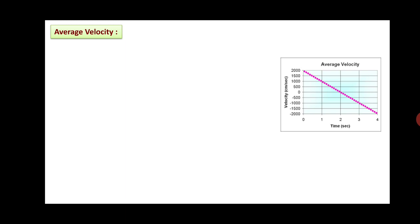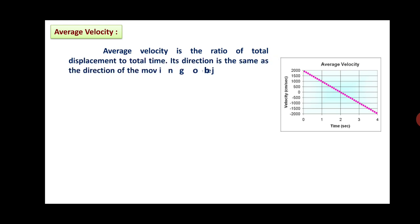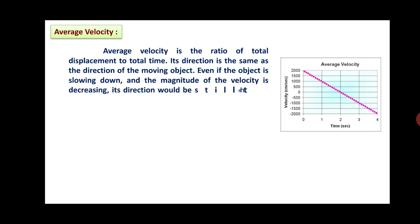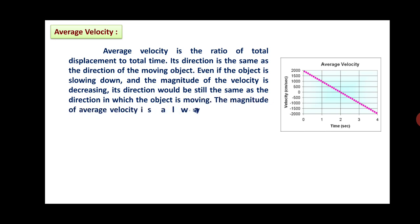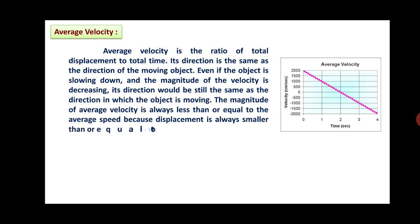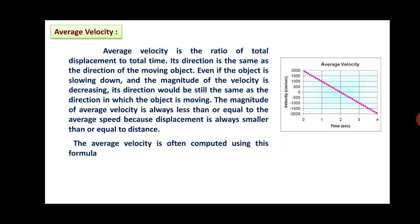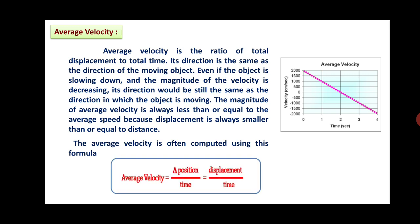Now we will see average velocity. You can see the graphical representation of this. Average velocity is the ratio of total displacement to total time, and its direction is the same as the direction of the moving object. Even if the object is slowing down and the magnitude of velocity is decreasing, the direction would still be the same as the direction of motion. The magnitude of average velocity is always less than or equal to average speed because displacement is always smaller than or equal to distance. The formula is: average velocity equals change in position (Δposition) divided by time, which can also be written as displacement divided by time.